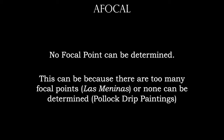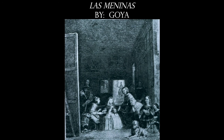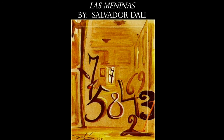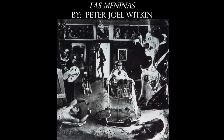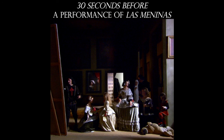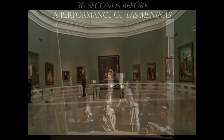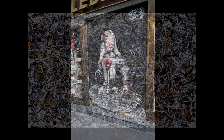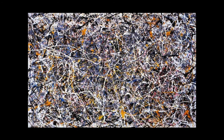Afocal could also mean that the focal point simply cannot be determined, such as in the drip paintings by Jackson Pollock. Now Las Meninas is an incredibly important work that inspired so many other artists, particularly Spanish artists — here is an etching by Goya, a work by Picasso, Salvador Dalí's version, a photo montage by Peter Joel Witkin, and real people dressed up to create a performance of Las Meninas. And just as a reminder, Jackson Pollock's works are going to be afocal as well — there is no place for the eye to rest.